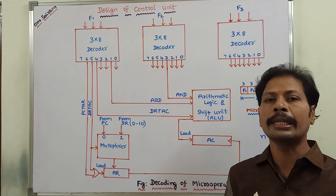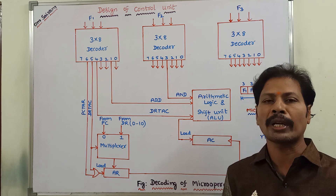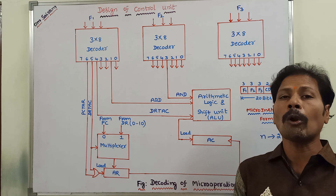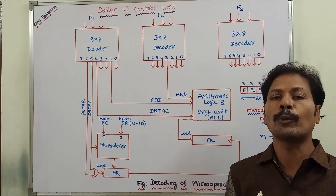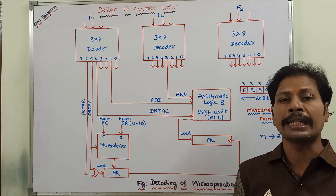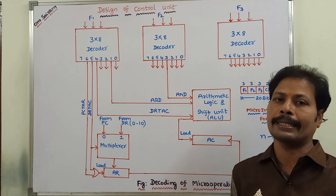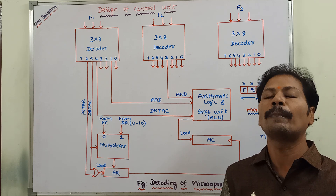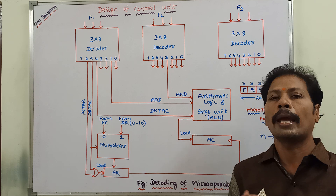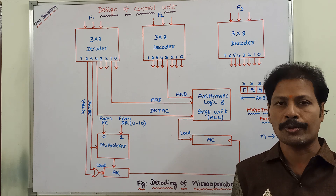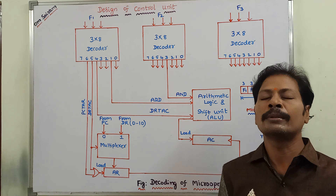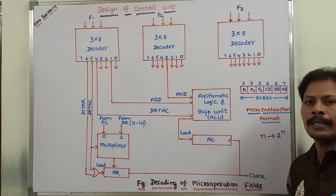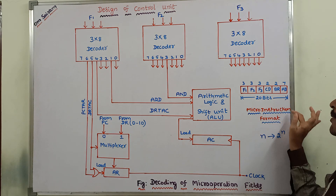The first one is the hardwired control unit. The second one is the microprogrammed control unit. In the case of a hardwired control unit, the control logic can be implemented with hardware components such as decoders, multiplexers, encoders, and flip-flops. Whereas in the case of a microprogrammed control unit, the control logic can be implemented with a microprogram. A microprogram is a set of microinstructions, and each microinstruction is stored in the control memory using a particular format called the microinstruction format.